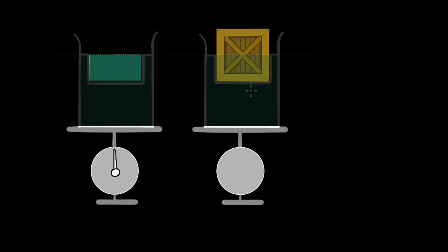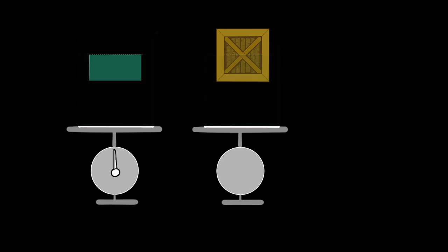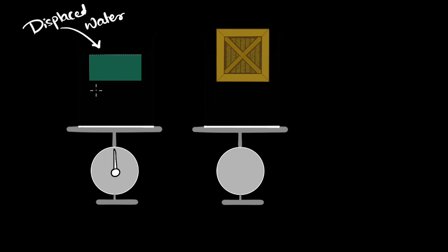We're dealing with fluids here, which means concepts of Archimedes' principle and buoyancy are right up there. So I'm immediately thinking about Archimedes' principle. If you see carefully, you'll see that this is the section of water that is displaced by this crate. And that section is the same thing — this represents the displaced water. And what does Archimedes' principle say? It says that the weight of the displaced fluid equals the buoyant force.